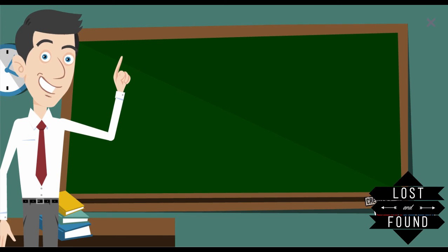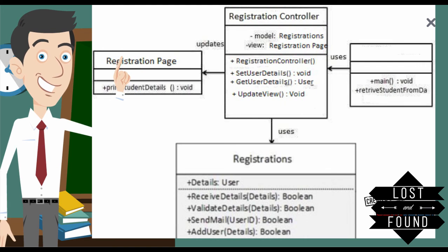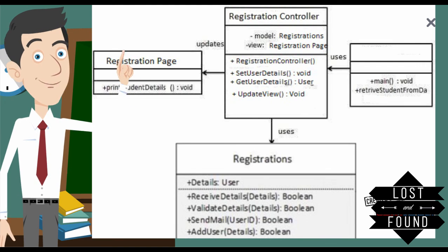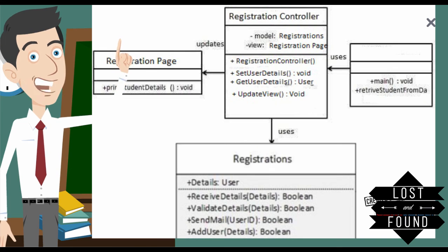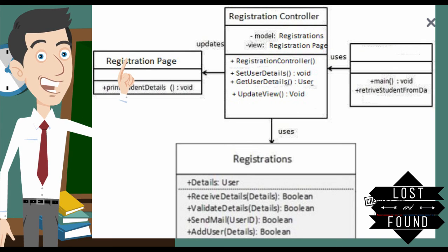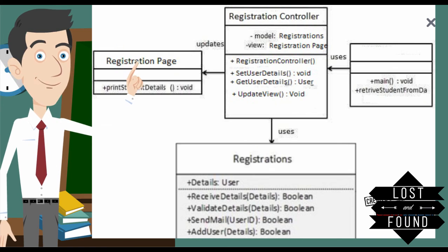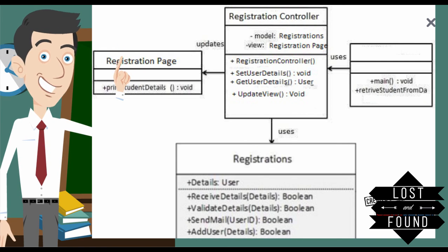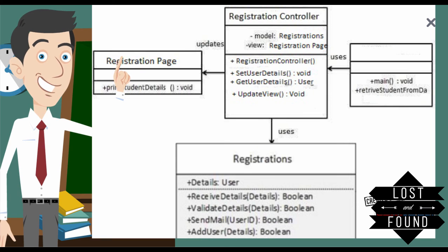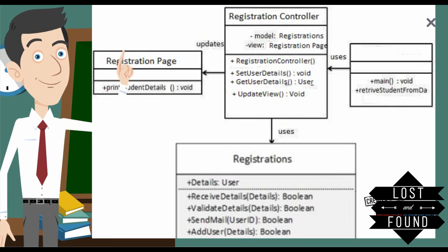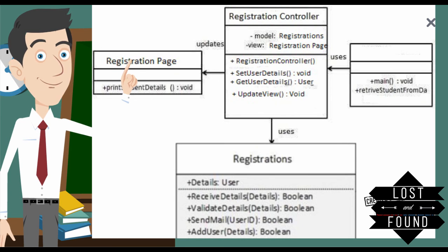As an example, we have a registration controller which contains model and view, with methods: registration controller, setUserDetails, addUserDetails, and updateView. We have a registration model containing user details of type user, with methods: receiveDetail, validateDetail, sendMail, and addUsers — which returns a boolean. The registration controller also has a registration page that shows student details and the view of the page.